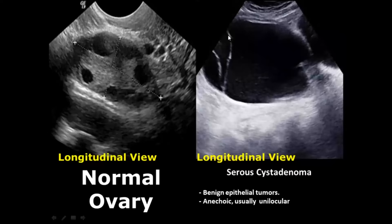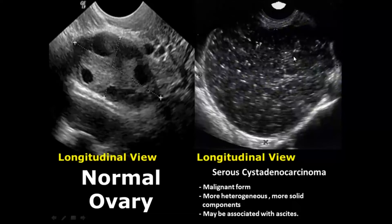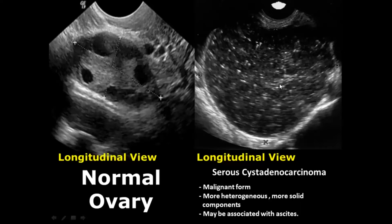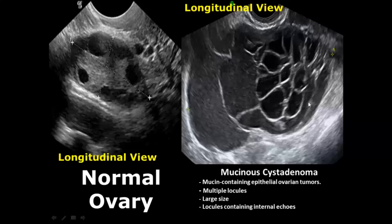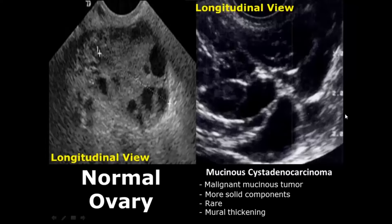Serous cystadenomas have anechoic, unilocular appearance — one compartment and anechoic, compared to the endometrioma. Serous cystadenocarcinoma is the malignant form, comprising heterogeneous appearance with more solid components, and the patient may also have ascites. Mucinous cystadenoma is larger in size and has many locules. Mucinous cystadenocarcinoma is the malignant form with more solid and heterogeneous components, and the walls of the locules are more hyperechoic.